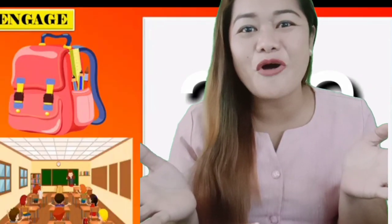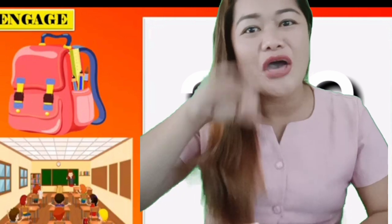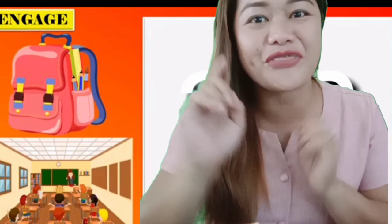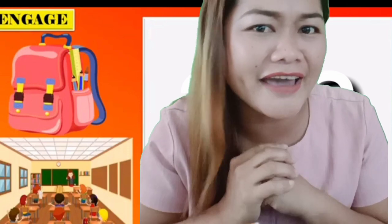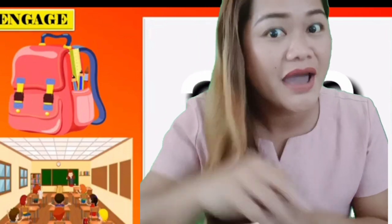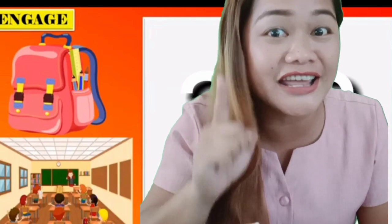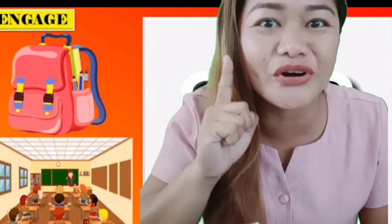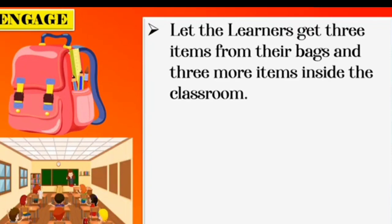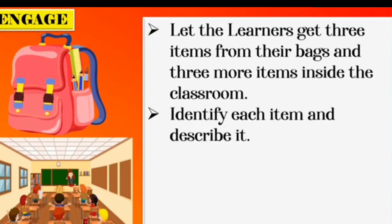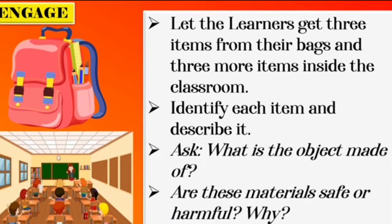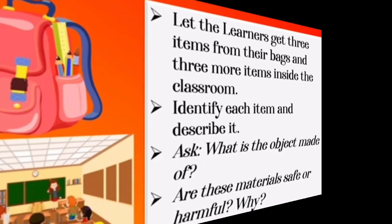Okay, this time, all you have to do is to get three things inside your home and three things inside your bag. Get three things inside your bag and three things inside your home or house. Identify each item and describe it. What is the object made of? Are these materials safe or harmful? Why?